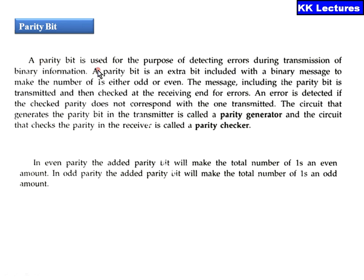Parity bits are used for the purpose of detecting errors during the transmission of binary information. A parity bit is an extra bit included with the binary message to make the number of ones either odd or even. The message including the parity bit is transmitted and then checked at the receiving end for errors. An error is detected if the checked parity does not correspond with the one transmitted. The circuit that generates the parity bit is called a parity generator, and the circuit that checks the parity at the receiving end is called a parity checker.